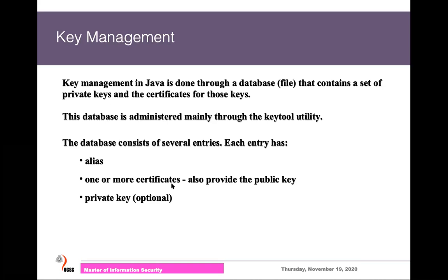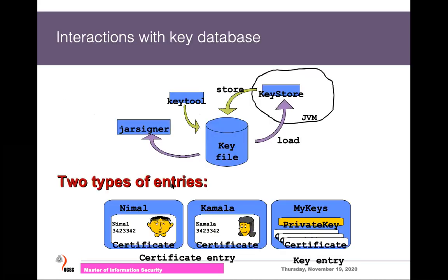Java KeyStores store private keys and public keys in public key certificate format. The KeyStore class provides methods to read and write to this file. The keytool command-line tool can also access this file. Additionally, there is the jarsigner command, which can digitally sign documents and also access the KeyStore file.